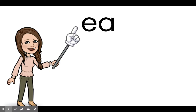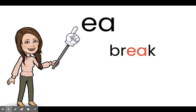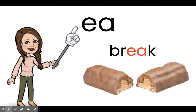E-A can make the sound A. Don't be tricked though — it can also make the long E sound. But for this week, we're going to identify words in which E and A together make the long A sound. Take a look at the word break: I break my candy bar in two. Break. E-A together make the long A sound in the word break.